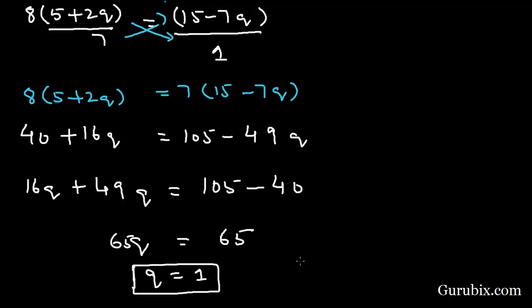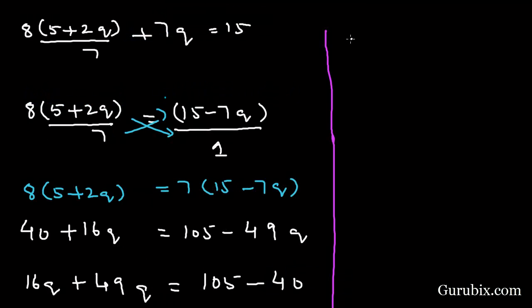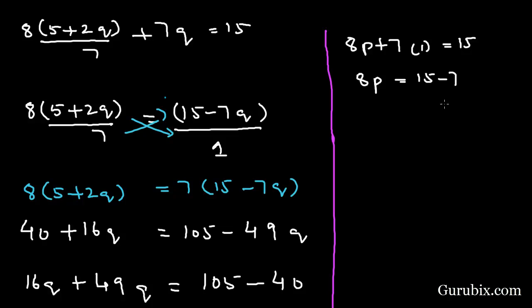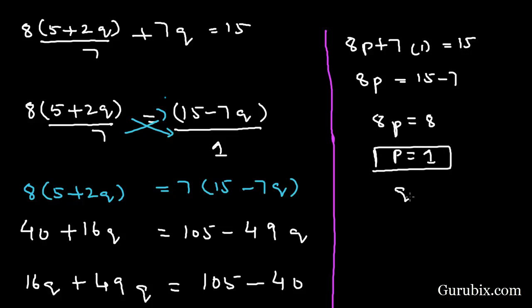Now we substitute q equals 1 into equation number 2 to find p: 8p plus 7 times 1 equals 15, so 8p equals 15 minus 7, which gives 8p equals 8, meaning p equals 1. So both p and q equal 1.